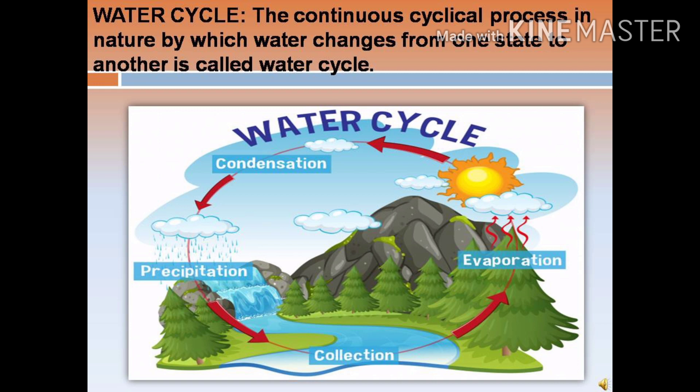Water Cycle. The continuous cyclical process in nature by which water changes from one state to another is called water cycle.